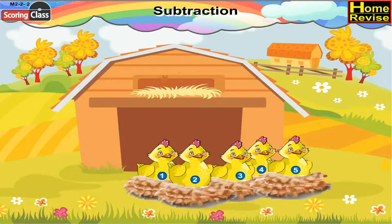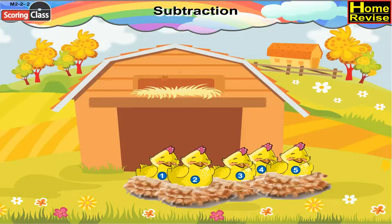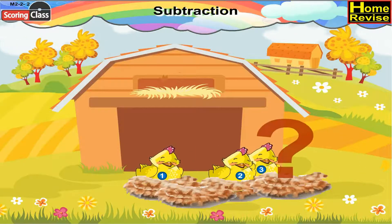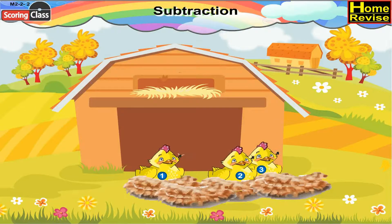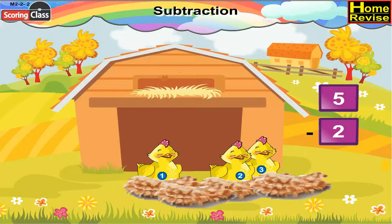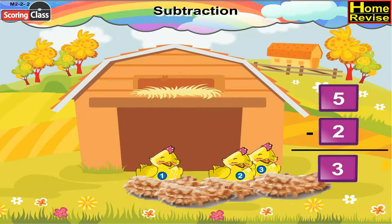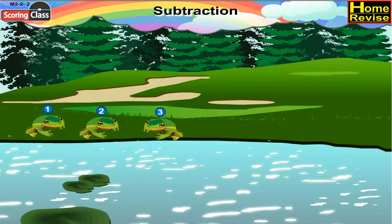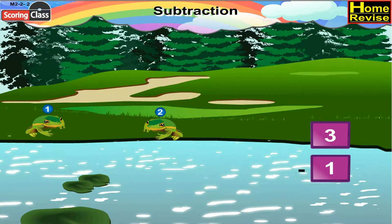There are five chicks in the bowl. Two of them went away. How many chicks are left? It will be five minus two, which is equal to three. Three frogs are playing on the ground. Suddenly, one of them went in the pond. How many frogs are left? It will be three minus one, which means the answer is two.